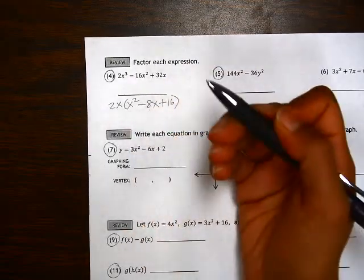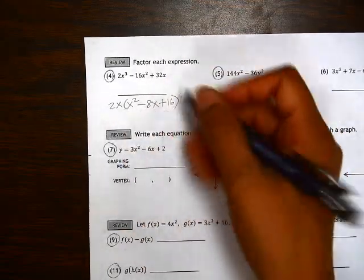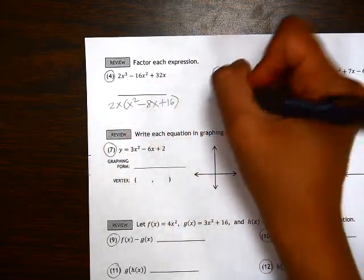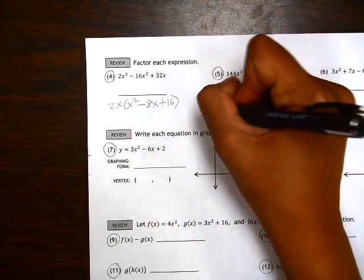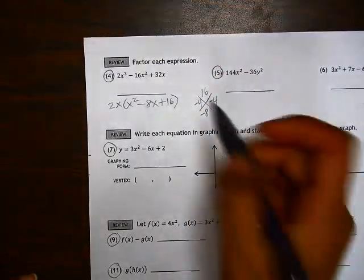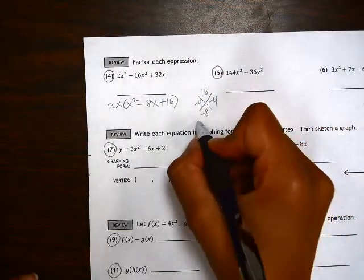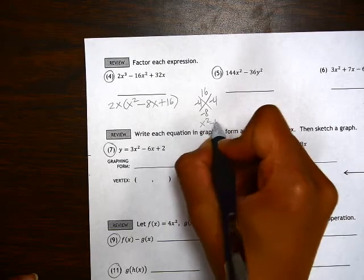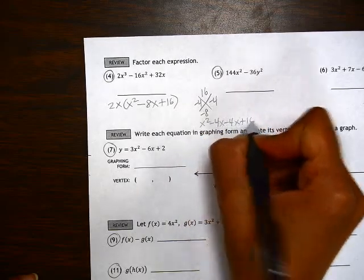And then we should always check if we can keep factoring further. So here, this expression, if we try to factor that, we get a diamond with negative 4 and negative 4. So that would give me x squared minus 4x minus 4x plus 16.